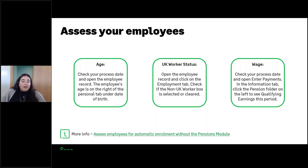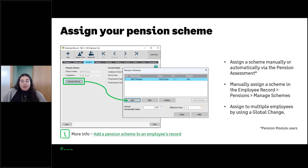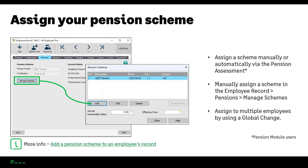A pension scheme can then be assigned manually in the employee record, or automatically via the pension assessment for pension module users. If you are a pension module user, it is very important not to assign the pension scheme manually in the record — let the pension assessment do all of that for you. For those who will be doing it manually and don't have the pensions module, let's dive into a demo.